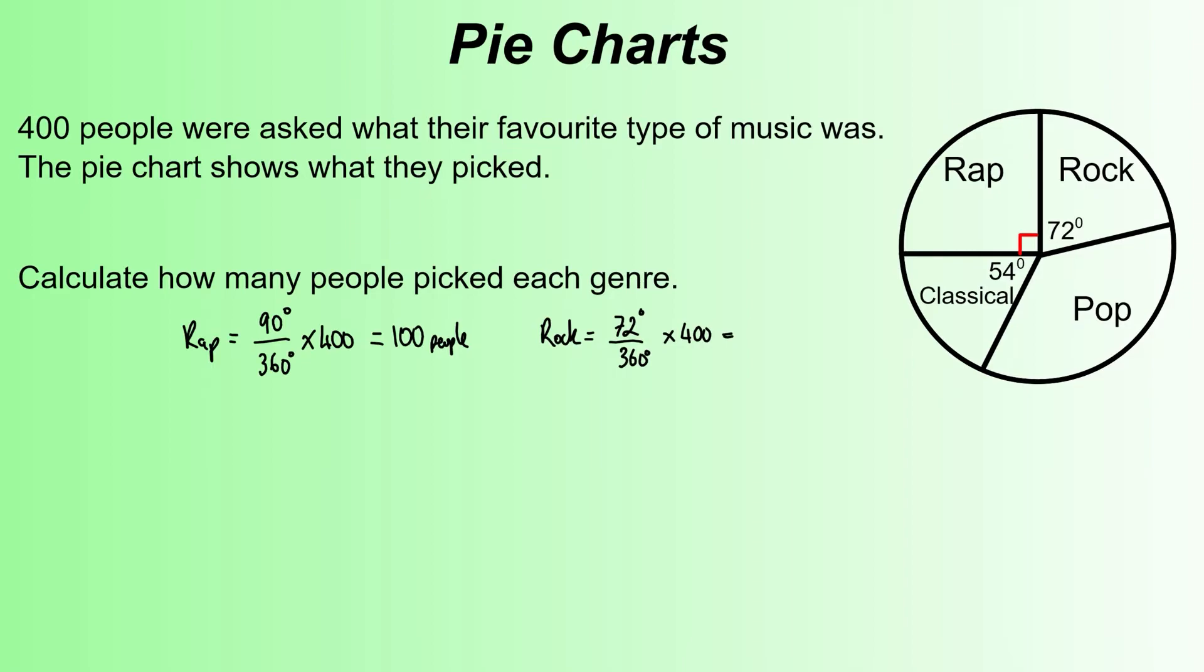Classical next. The classical is 54 degrees, so 54 degrees out of 360, and again that will simplify down a little bit. But we'll just take that into the calculator this time. We've got to multiply it by the 400, and that gives you 60.